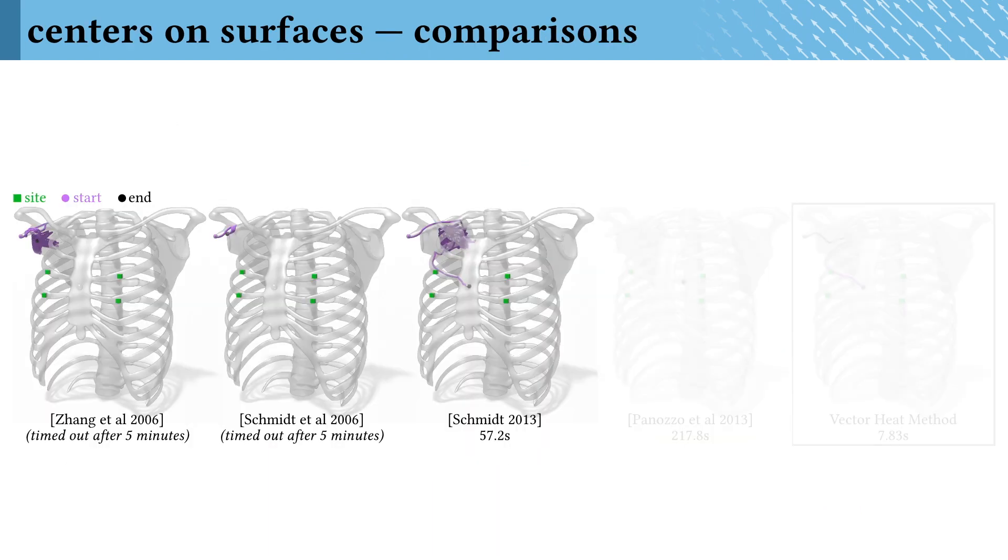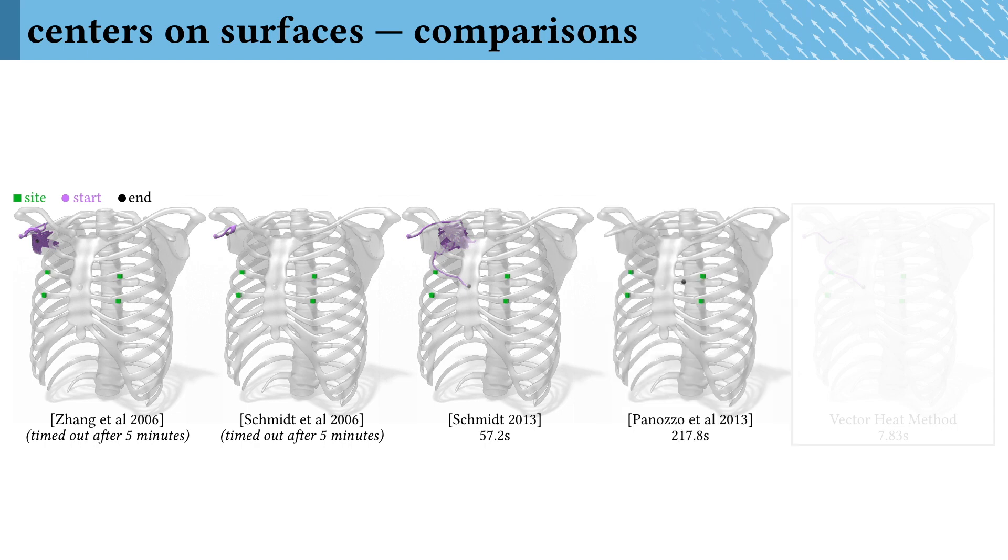This is really something you couldn't do with previous log map algorithms because they weren't globally accurate. Using Weiszfeld iterations with the three prior log maps just wanders randomly around the surface. Another prior approach on surfaces by Panozzo et al. fails to output the correct answer because it depends on a high-dimensional embedding which can't accurately capture this complex input shape.